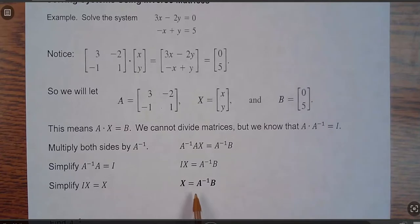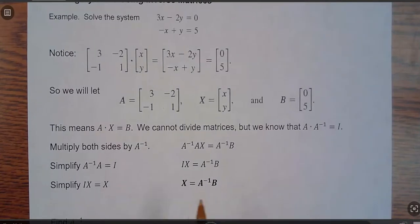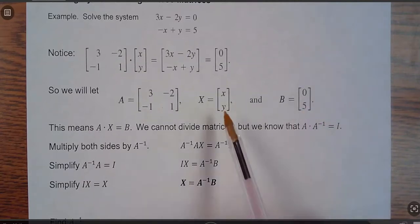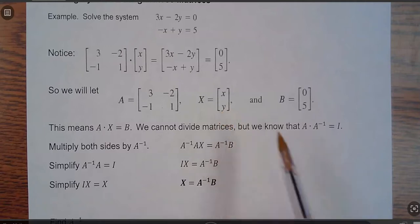So that would just be X. And the right side is the inverse of A times B. So if I took the inverse of A times B, those answers are X, which would be the variables themselves, what x and y equal.